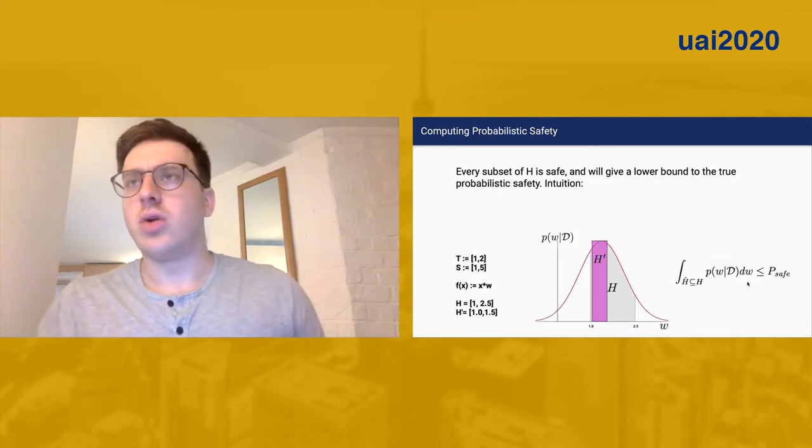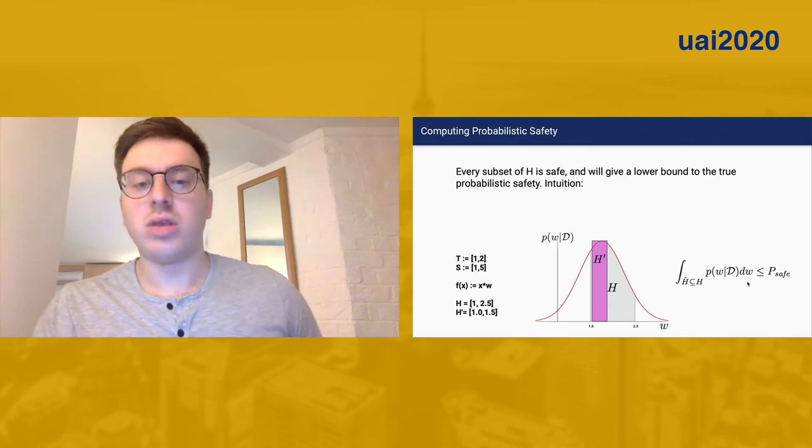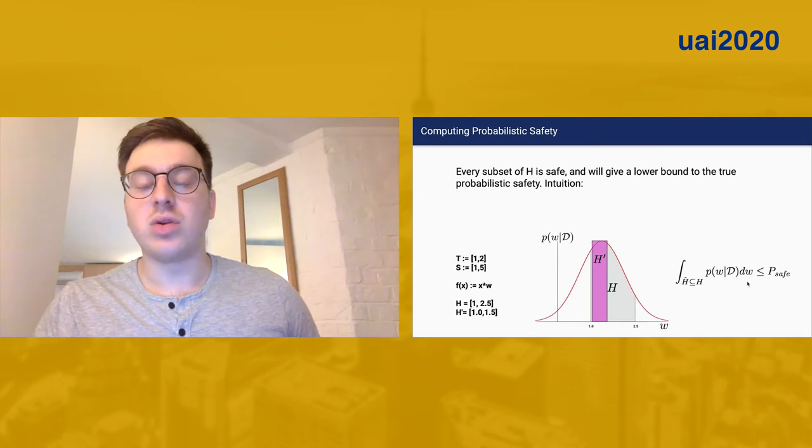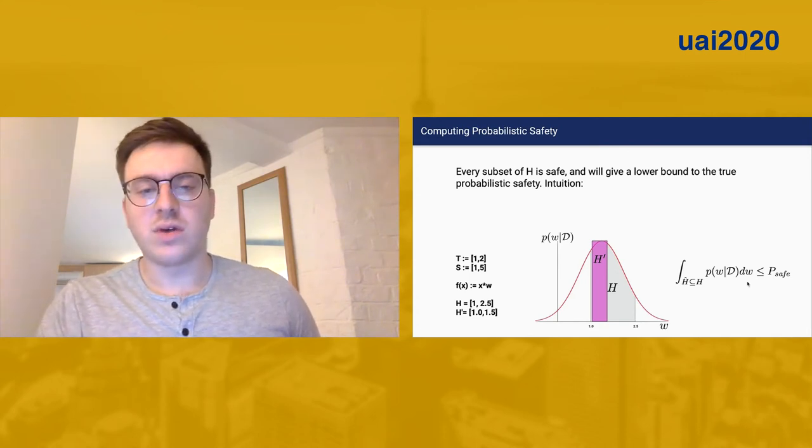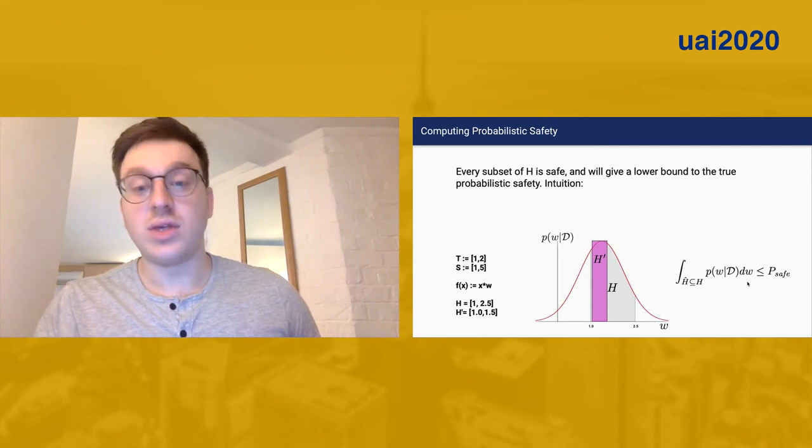In general, we don't know H. We won't know a priori the entire set of safe weights. And so an insight into how we might compute a lower bound for this value is that every subset of this safe weight interval is itself safe.